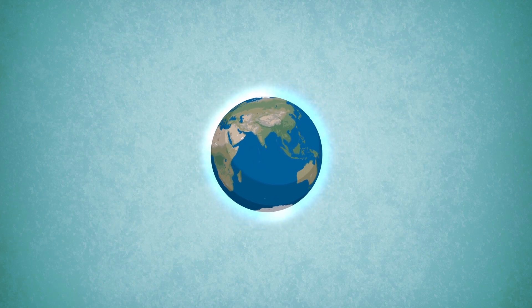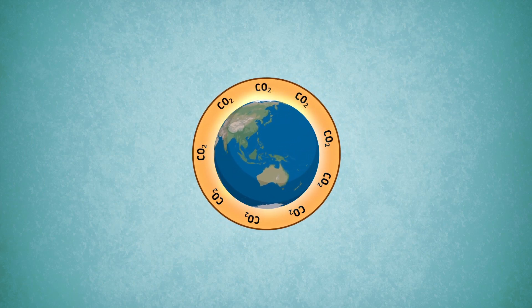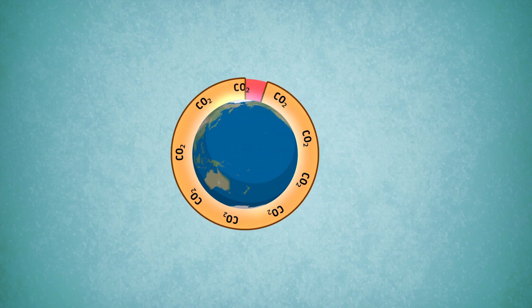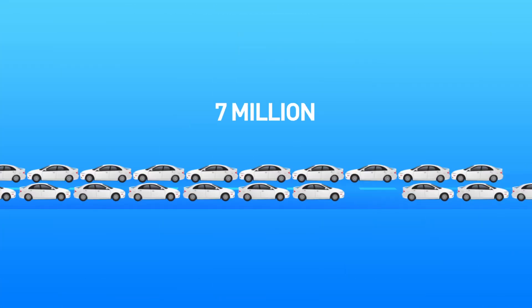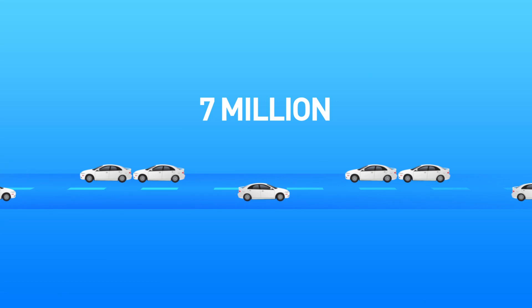They're good for the environment, too. In 2009, GM crops reduced global CO2 emissions by 17.7 billion kilograms. That's like taking more than 7 million of these off the road.